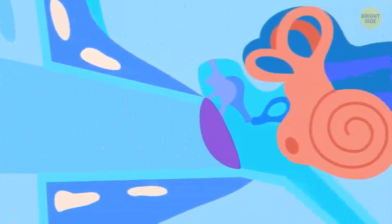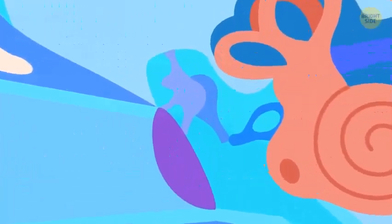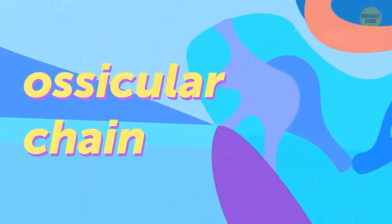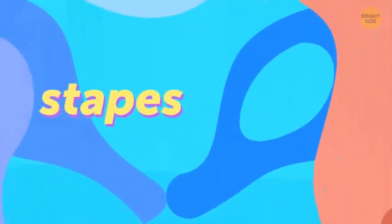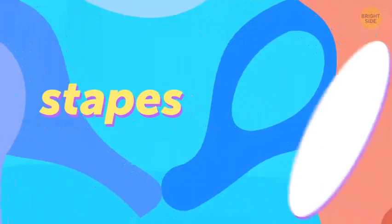The only bones that never grow are found in our ears. We can hear thanks to these tiny bones, because they have adapted to transmit sound vibrations. Doctors call them the oscular chain. One of these hearing bones, the stapes, is the smallest bone in your entire body. It's no larger than a grain of rice.